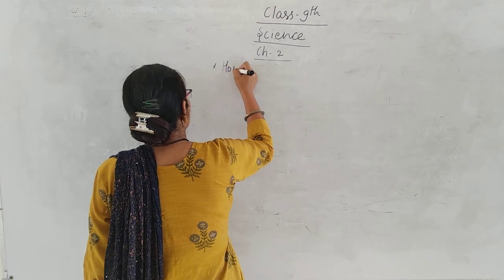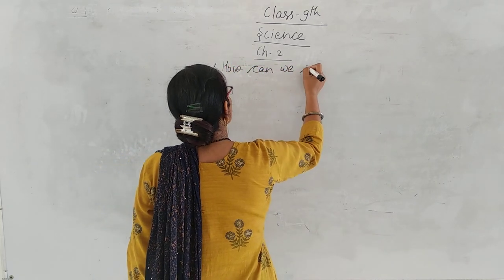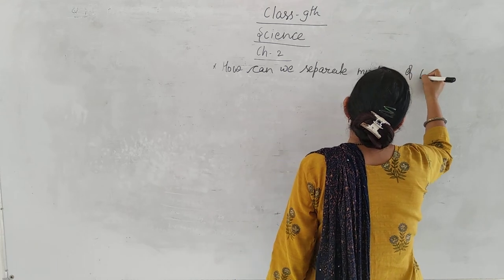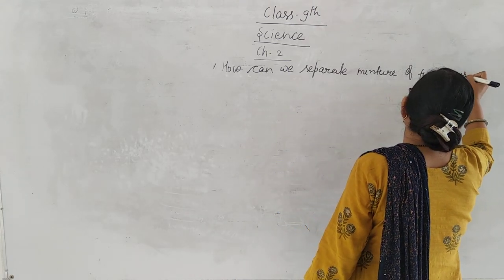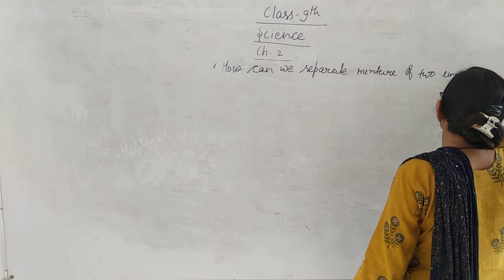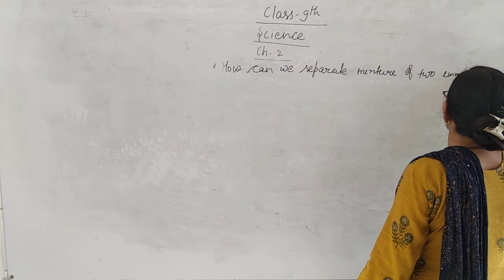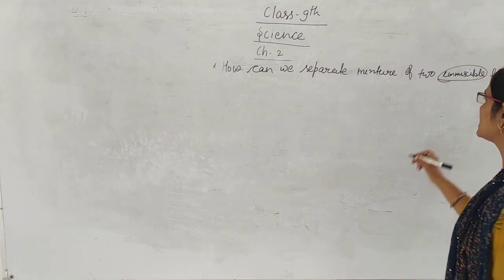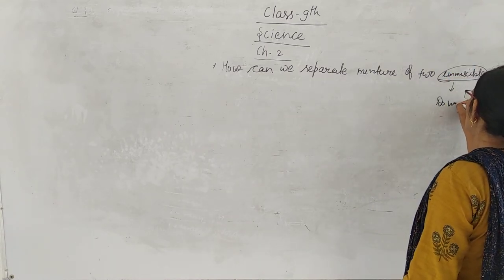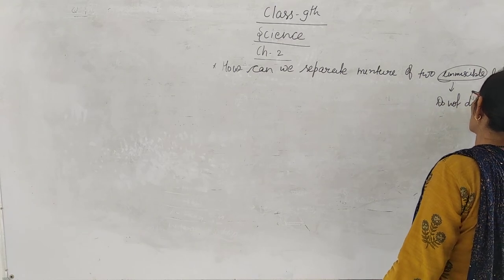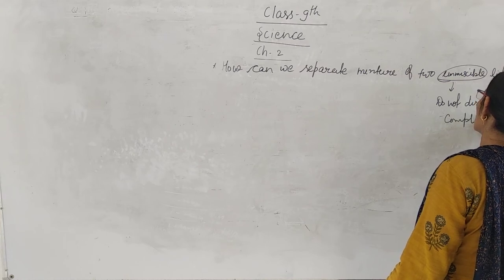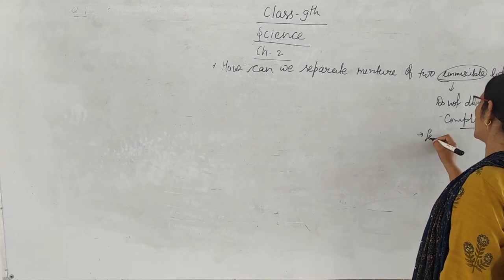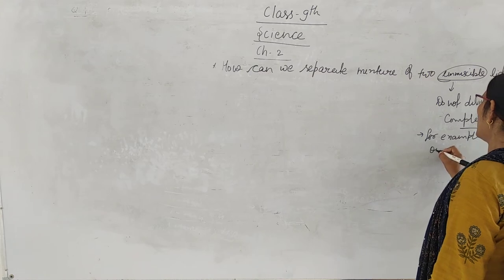Today let us discuss how we can separate a mixture of two immiscible liquids. First of all, what is immiscible? When two liquids do not dissolve completely in each other, those liquids are known as immiscible. For example, oil and water.